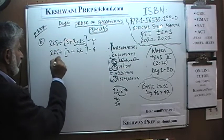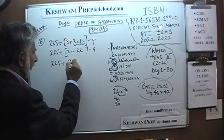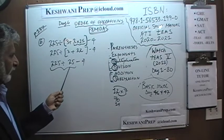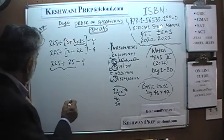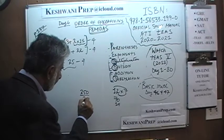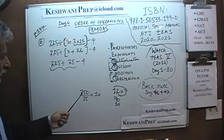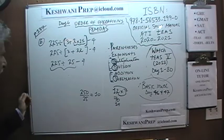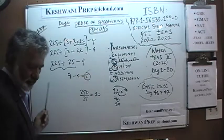Now we do the division: 225 divided by 25. 250 divided by 25 would have been 10, and 225 is 25 less than 250, so it is 9. Then 9 minus 4 is 5. The answer is 5.